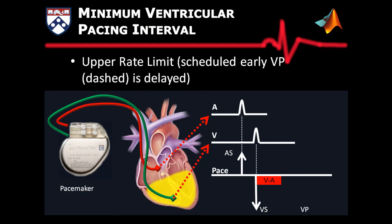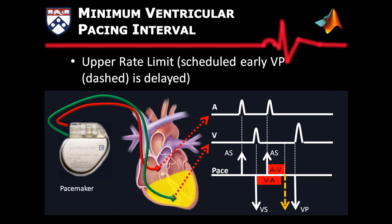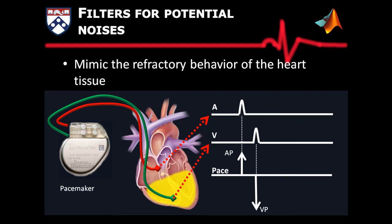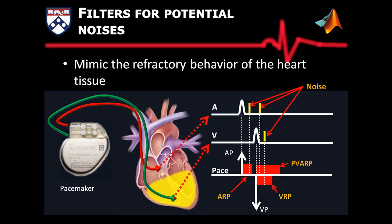If an atrium sense happens early, the scheduled ventricular pace after the AV deadline is delayed so that the interval between a ventricular event and ventricular pace is no less than the lower rate limit. This prevents the pacemaker from increasing the heart rate too fast. There are several other filters designed to eliminate noises which can be mistakenly treated as heart events. For more information and latest updates, please go to medcps.org.